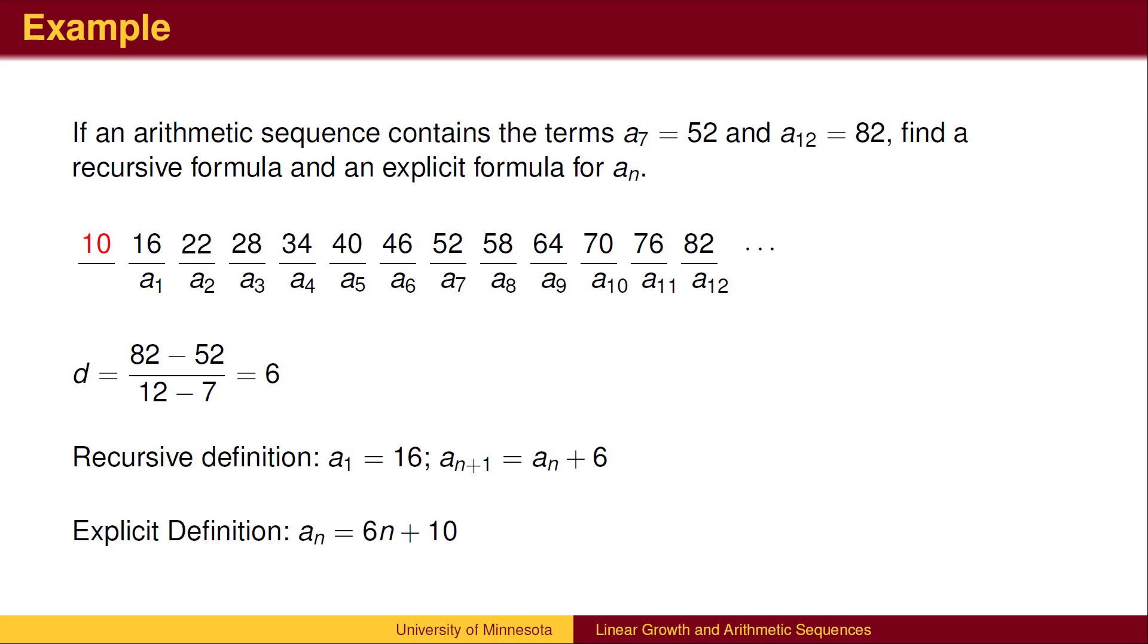To find the recursive definition, list a starting value. For example, we can state that a_1 equals 16. We could have given the value of a_0 instead. We then need to state the recursion, which in this case is to find the next term by taking the previous term and adding 6. For the explicit formula, we find the starting point a_0, which is 10, and add to 10 the number n of steps of size 6.